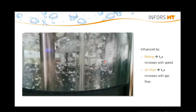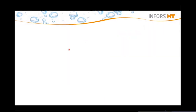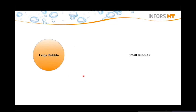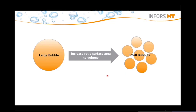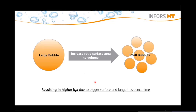But why exactly are smaller bubbles needed? A bigger bubble has a smaller surface compared to the surface of all the small bubbles together, but they still have the same volume as you can see in this illustration. So they need the same space inside the bioreactor, but the large bubble has a smaller surface. By shredding the bubbles, we can increase the ratio from the surface to the volume, and thereby the KLA is higher, giving us a better oxygen transfer.